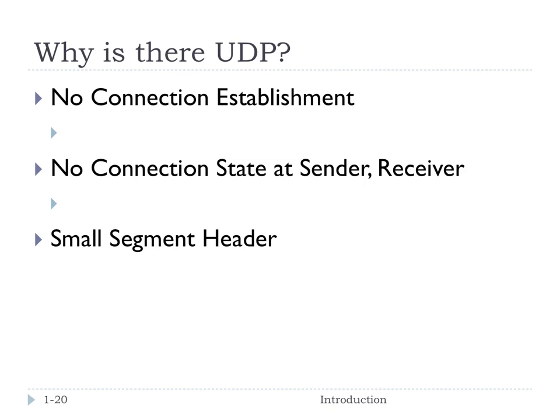Third, UDP has a very small segment header because there's no state to pass back and forth, so there's not much extra overhead in the header. Lastly, there is no congestion control, which means there are no speed limits. UDP can blast away as fast as it desires, and neither the receiver nor network congestion is going to slow it down.